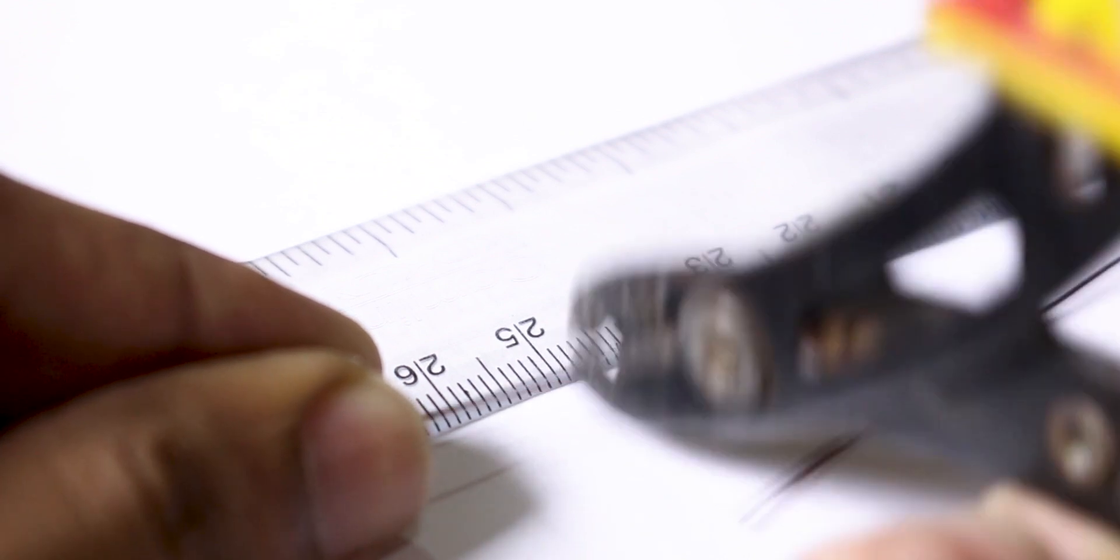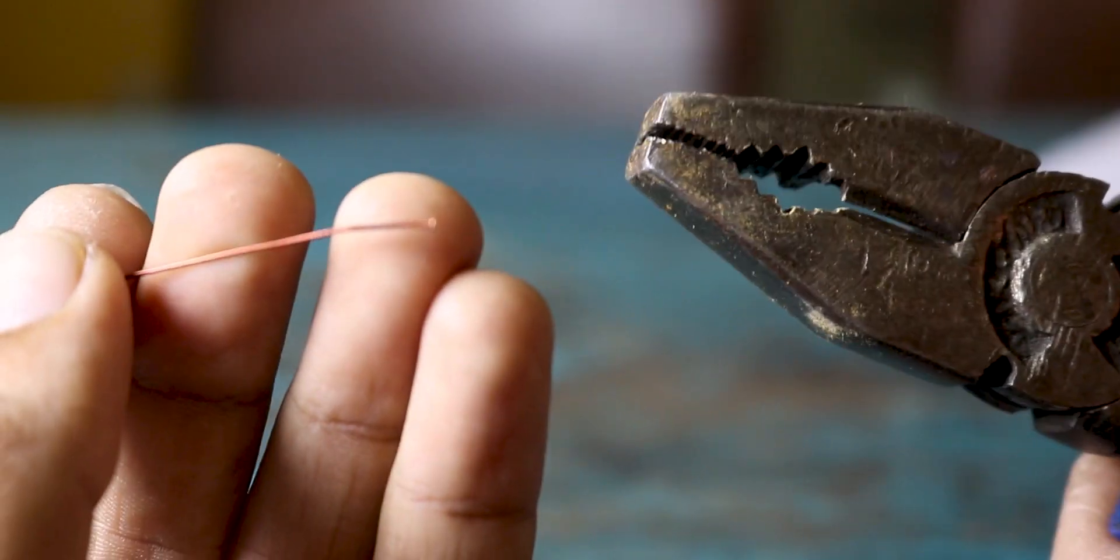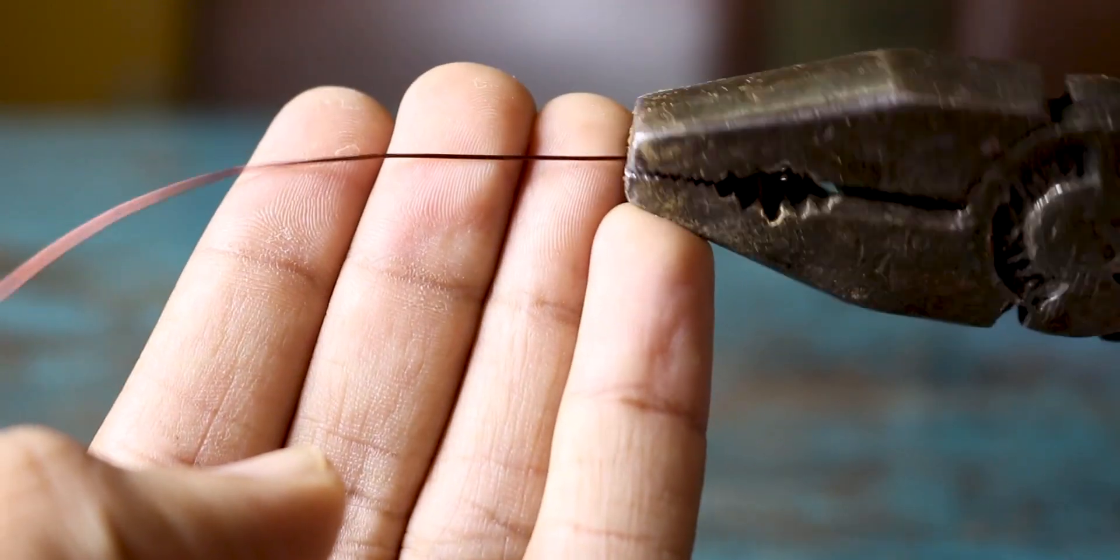Now measure about 25cm of copper wire and cut it to its length. After which we will use some sandpaper and a plier to remove the enameled coating from the copper wire, exposing the copper.